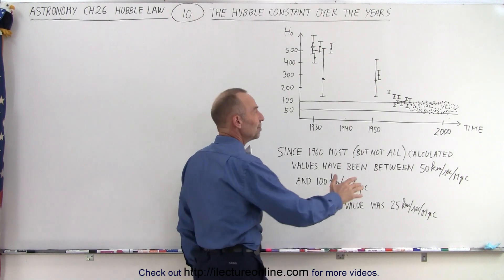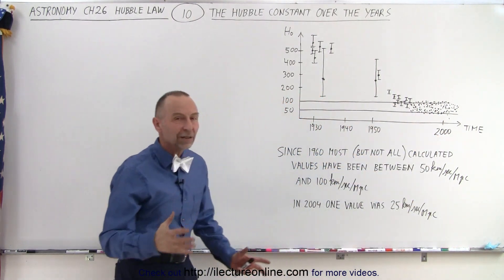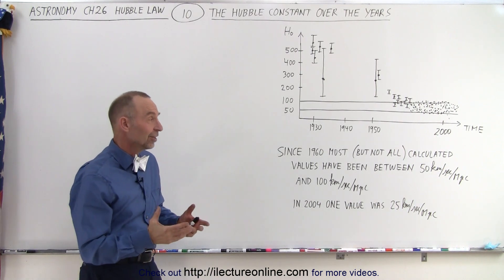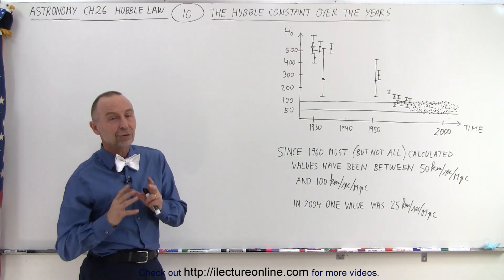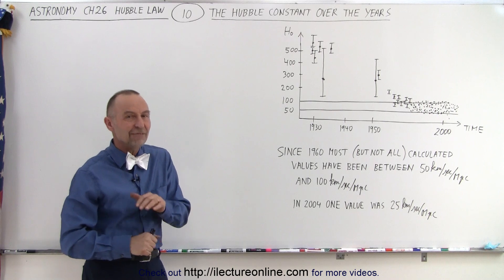But you can see there has just been a sea of data coming in with all kinds of different estimates, most of them between 50 and 100, and you can see that even today there's still a lot of values coming in that do not fall within the narrow range of the accepted values for the Hubble constant.